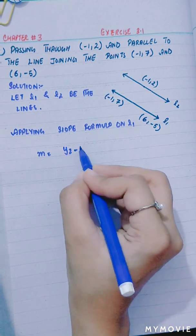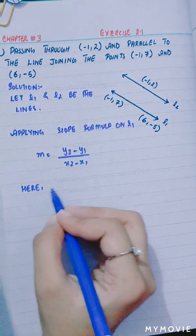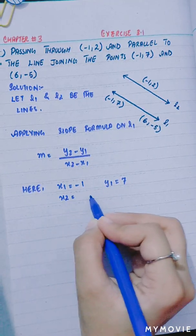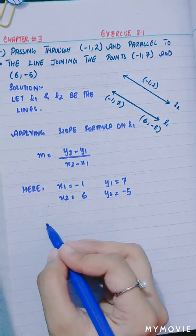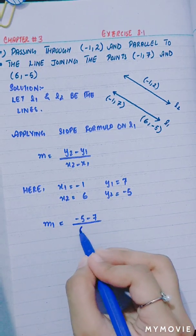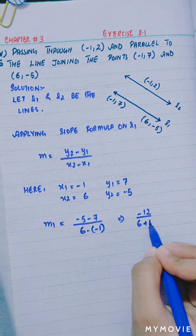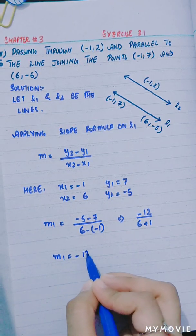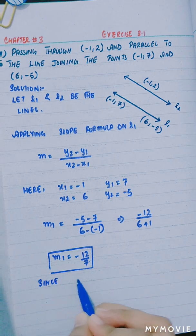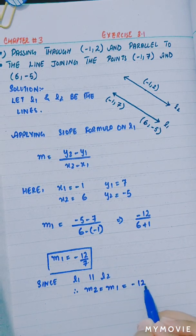M is equal to y2 minus y1 divided by x2 minus x1. Here x1 is minus 1, y1 is 7, x2 is 6, and y2 is minus 5. M1 is equal to minus 5 minus 7 divided by 6 minus minus 1, which gives minus 12 divided by 7. Since L1 is parallel to L2, therefore M2 is equal to M1, which is minus 12 over 7.